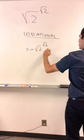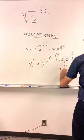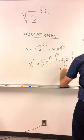Then x to the y is square root of 2 to the square root of 2, to the square root of 2, which is square root of 2 squared, which is 2, which is rational. So the question is, is this number rational or irrational? We don't know and we don't care because it actually solves the problem.